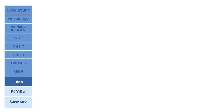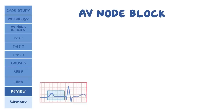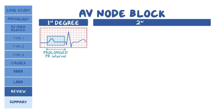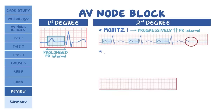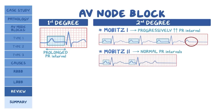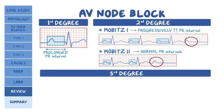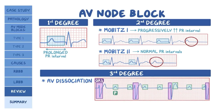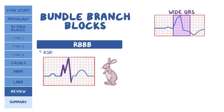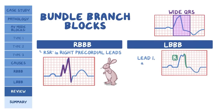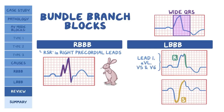As a quick recap: AV node block is divided into three major subtypes. First degree AV block is simply a prolonged PR interval. Second degree AV block has two subtypes — Mobitz I and Mobitz II. Mobitz I is characterized by a progressively prolonged PR interval followed by a dropped beat. Mobitz II has a normal PR interval followed by a sudden dropped beat. In third degree AV block, there is no relationship between the P waves and QRS complexes, a phenomenon known as AV dissociation. Bundle branch blocks also have a wide QRS complex. In RBBB, an RSR complex, or rabbit ears, appears in the right-sided precordial leads. In LBBB, there are tall R waves in leads 1, AVL, V5, and V6, as well as deep S waves in lead V1.